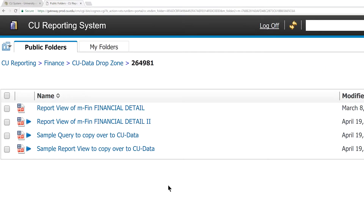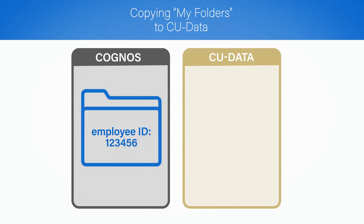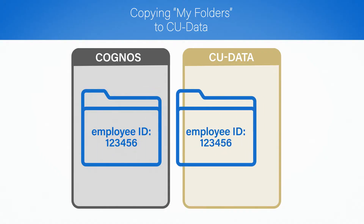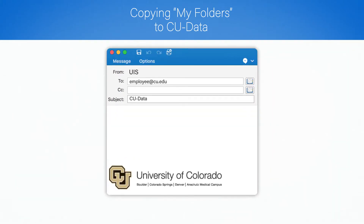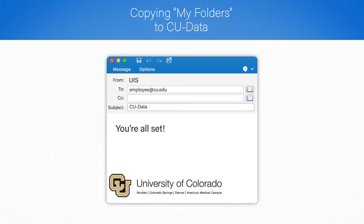After you've pasted your items to your employee ID folder in Cognos, UIS will copy them to your employee ID folder in CU Data. They'll email you when they're done, and again, this may take a day or two.